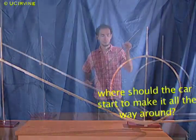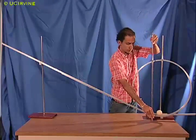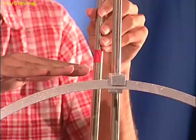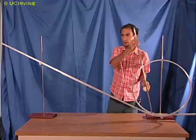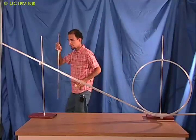If Jose releases the ball from the same height as the top of the loop, energy conservation tells us that it can only roll back up to the same height and fall off at the top of the loop.